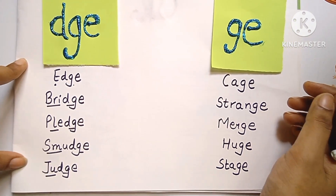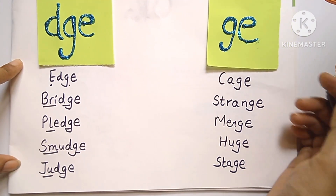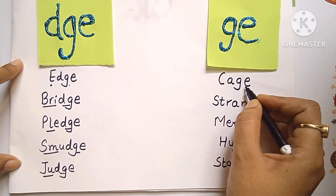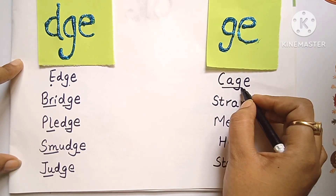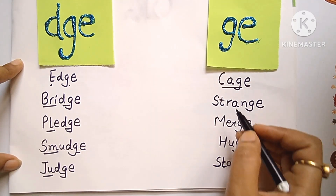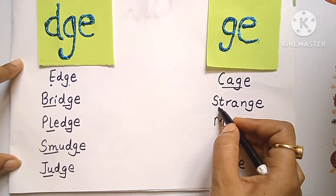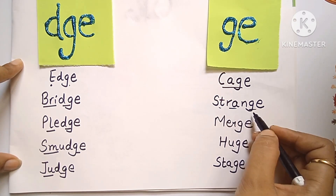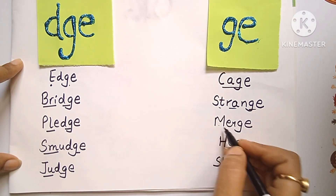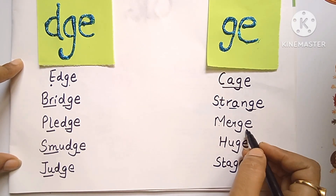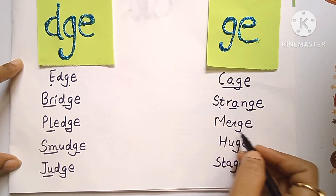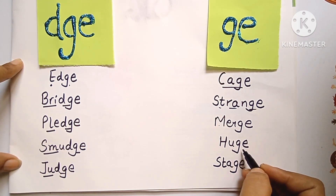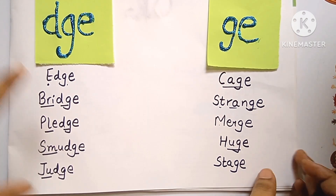Now the digraph G, E. Cage, cage. Strange, strange. Merge, merge. Huge, huge.